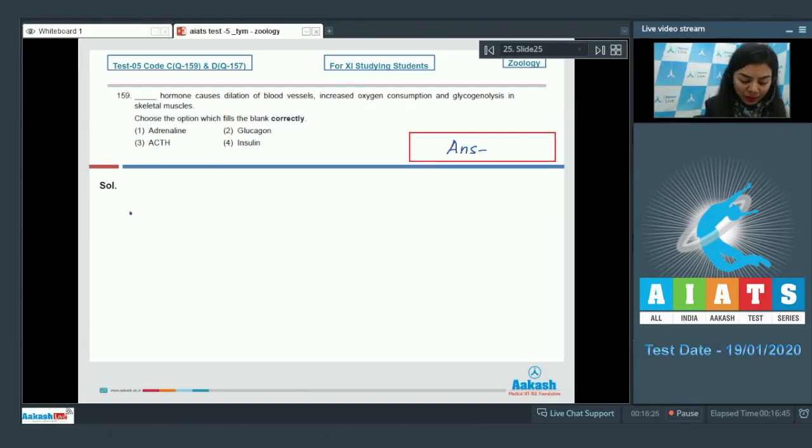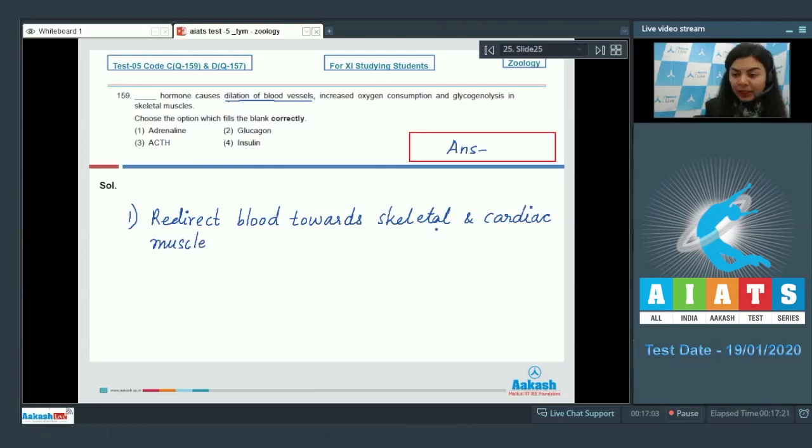Let's look at the options one by one. Option number one, adrenaline with respect to dilation of blood vessels. Yes, it will bring about dilation of blood vessels to redirect blood towards skeletal and cardiac muscle. And this would be essential to deal with flight or fight situations. Increased oxygen consumption, that is also correct. It will also increase oxygen consumption and glycogenolysis to increase the level of glucose in blood. That is also true.